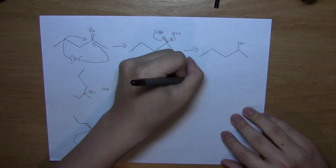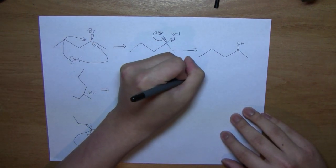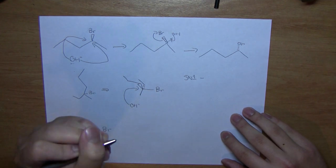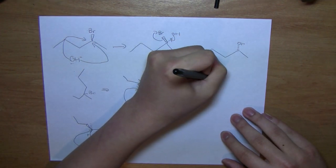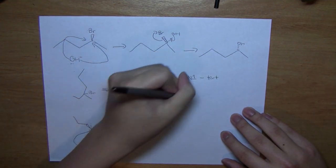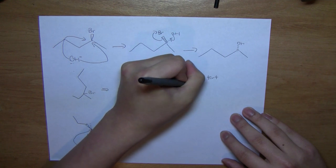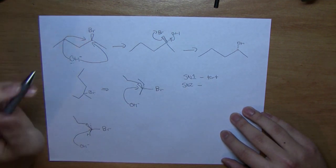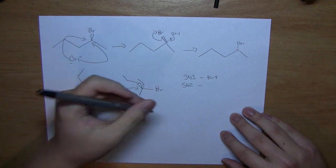So in summary, we can have SN1 reactions happening if the leaving group is on a tertiary carbon. And we have SN2 reactions happening if the leaving group is on either a secondary or a primary carbon.